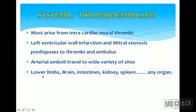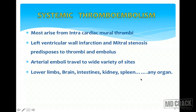Arterial thrombi can migrate to different sites: they can affect the lower limbs causing gangrene, go to the brain causing stroke and cerebral infarction, go to intestinal mesenteric vessels causing ischemic bowel disease, go to the kidney causing renal infarction, or go to the spleen causing splenic infarction.